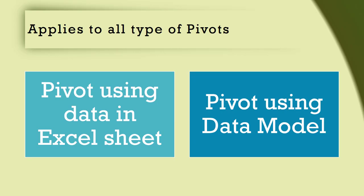One last thing: pivot tables are created in two different ways — one is with data in Excel sheets, which is the traditional method, and one is data in a data model which could have multiple pieces of data with relationships. The pivot table defaults we have just talked about apply to traditional pivot tables as well as pivot tables created from data models.